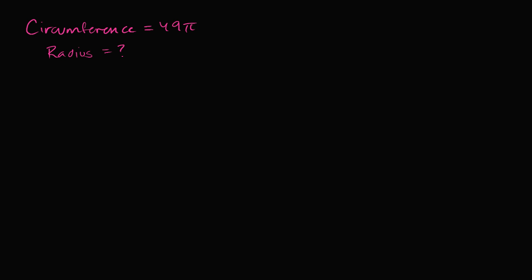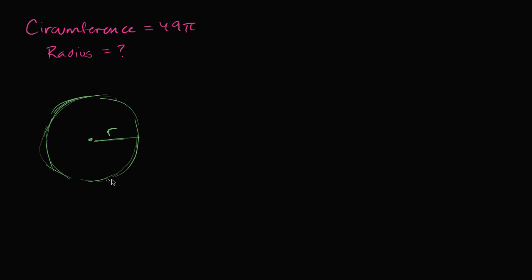So let's just draw the circle to help visualize it. I'm just going to do a hand-drawn circle, clearly not a perfect circle right over here. And we know that if the radius is of length r, the circumference is going to be two pi times r. So I could write: circumference is equal to two pi times r.